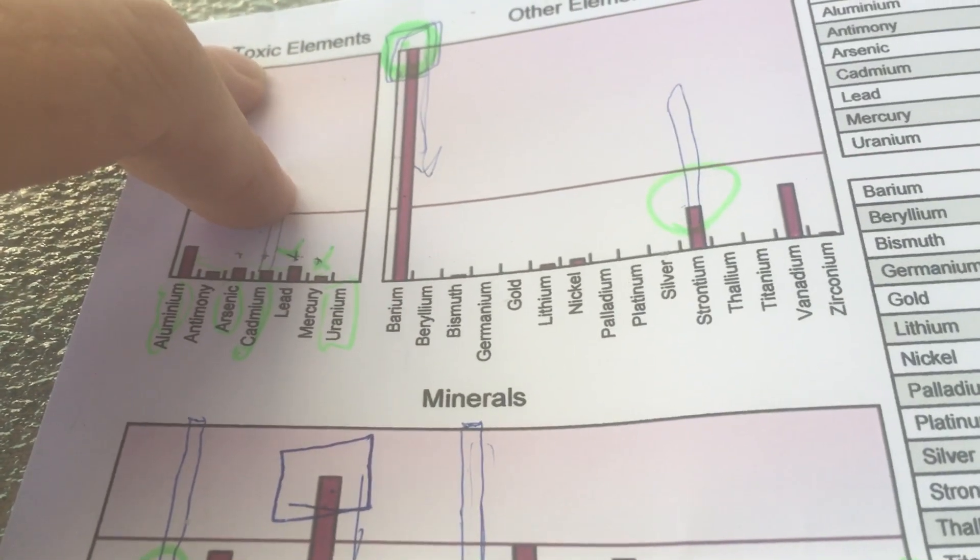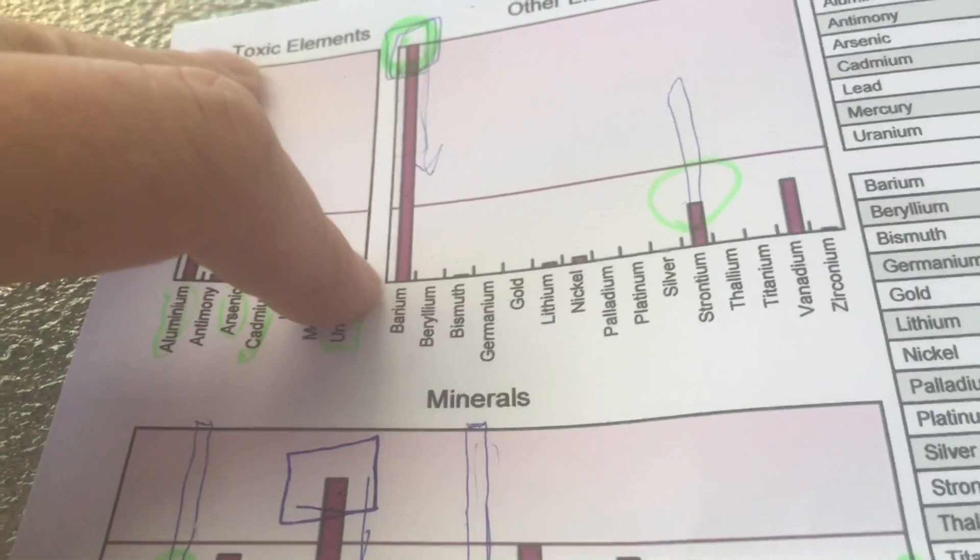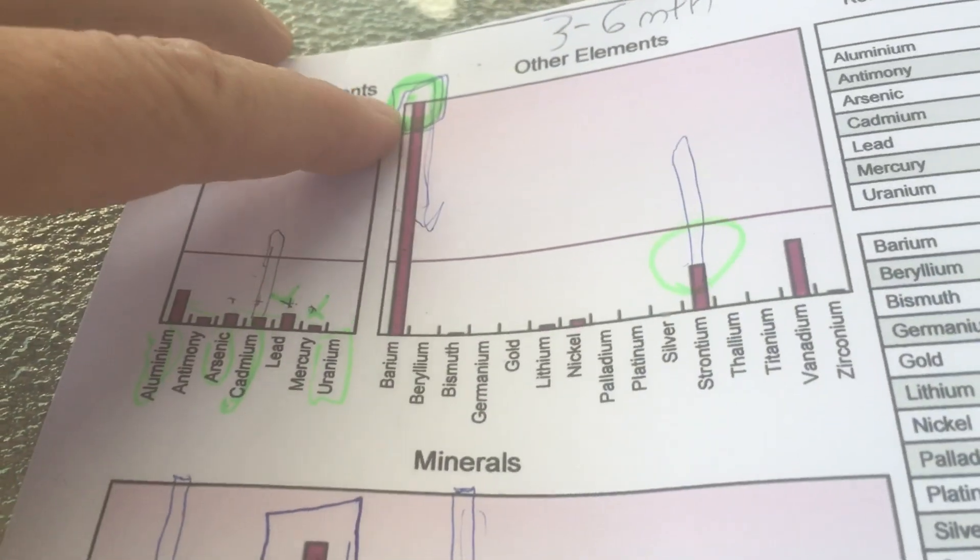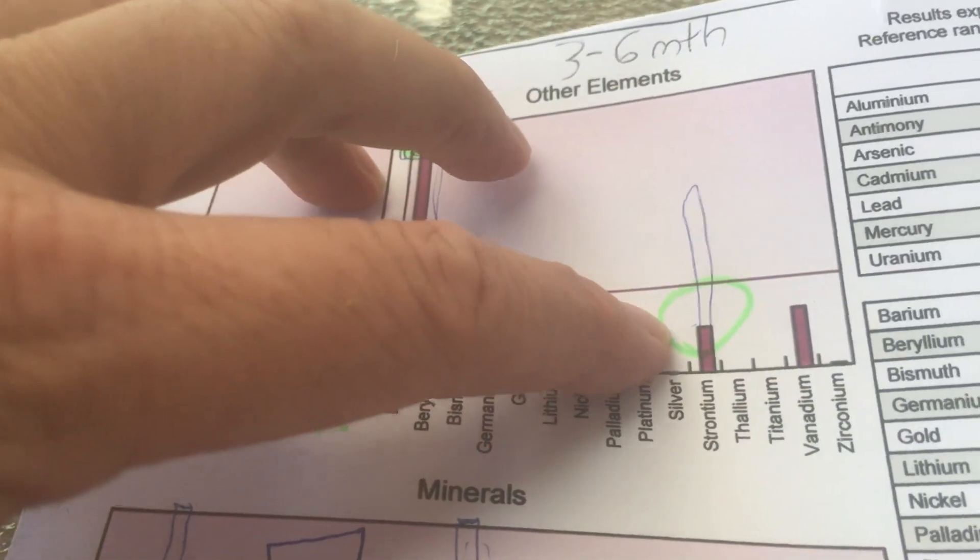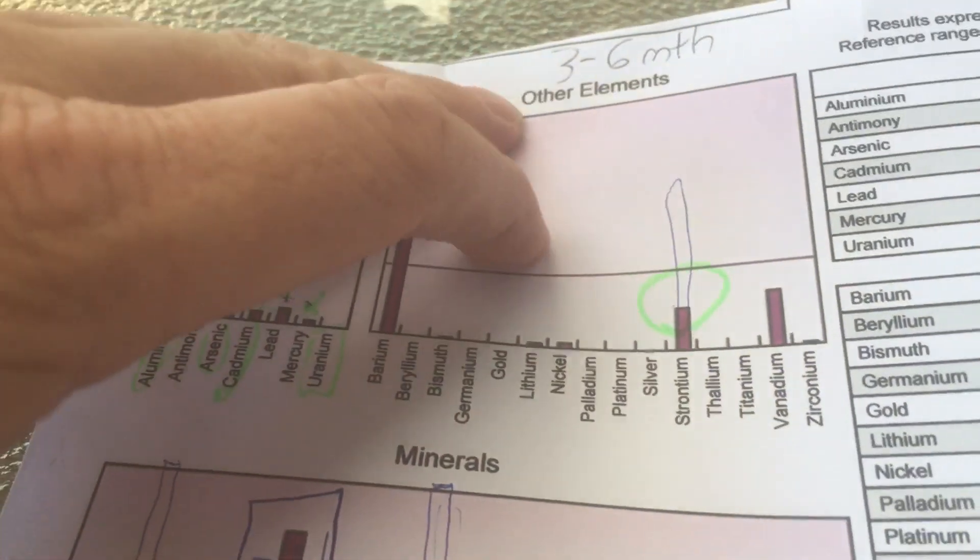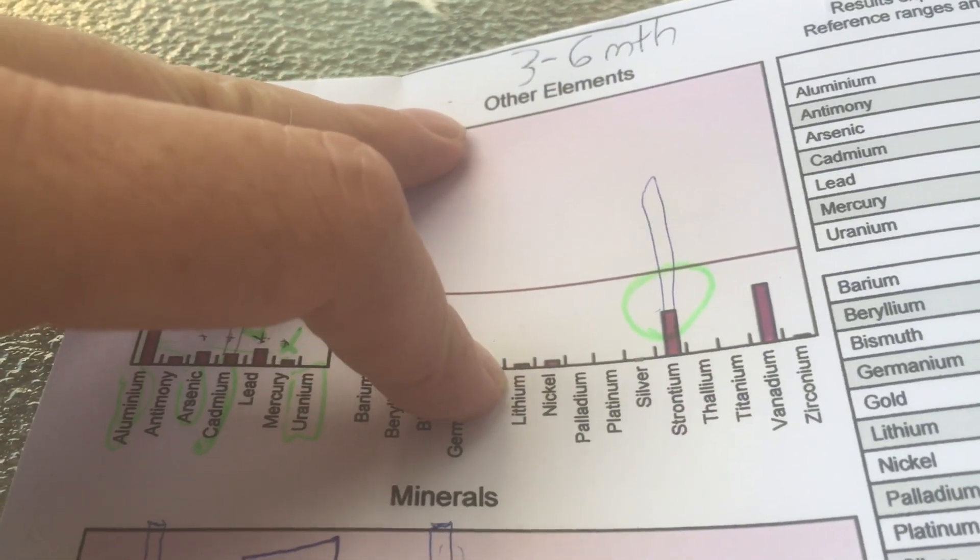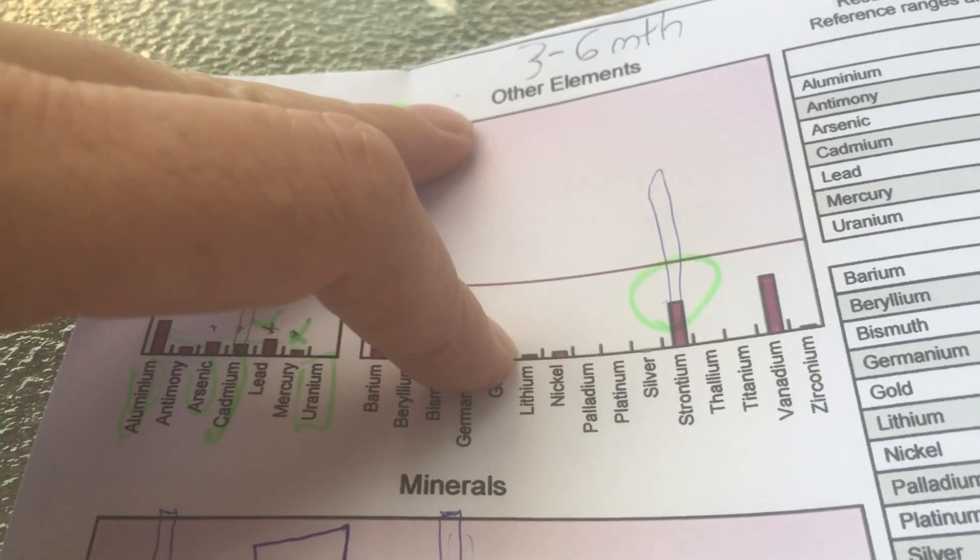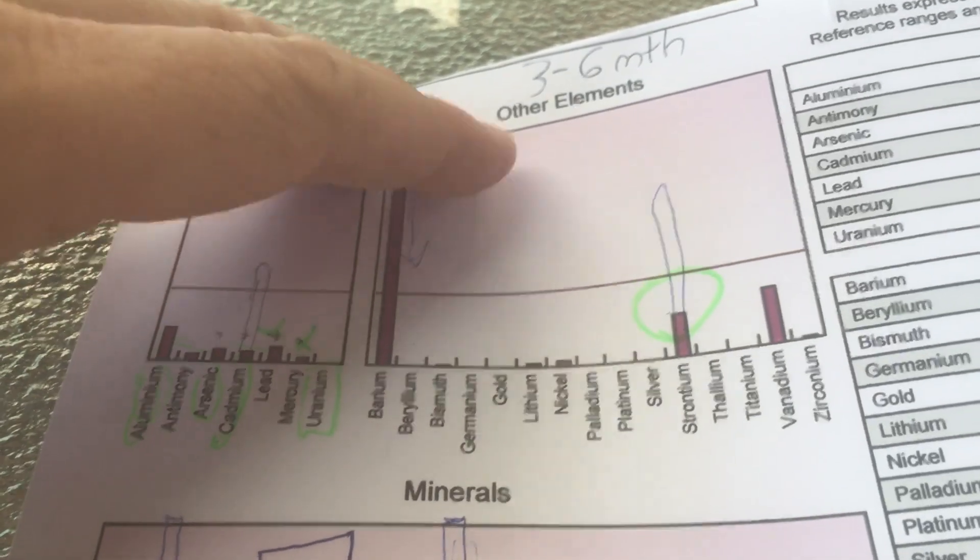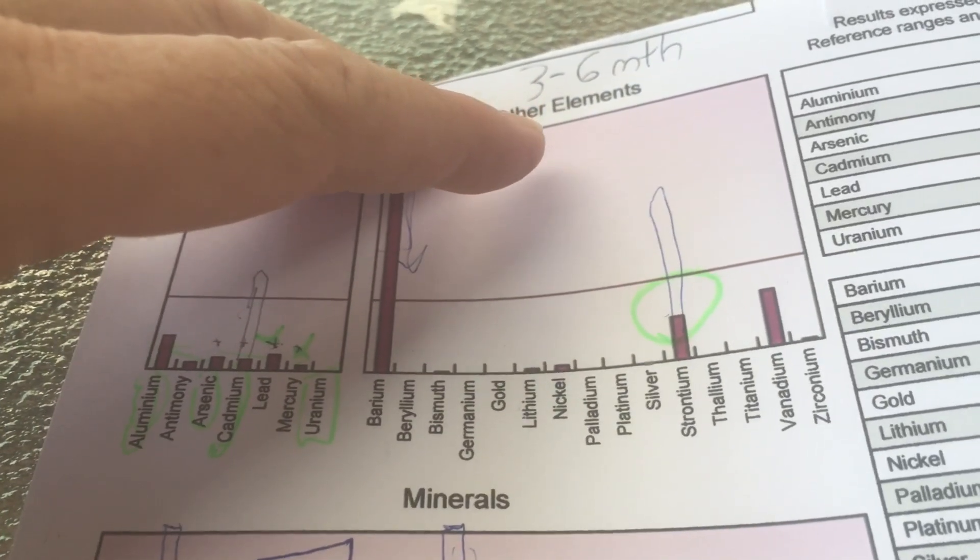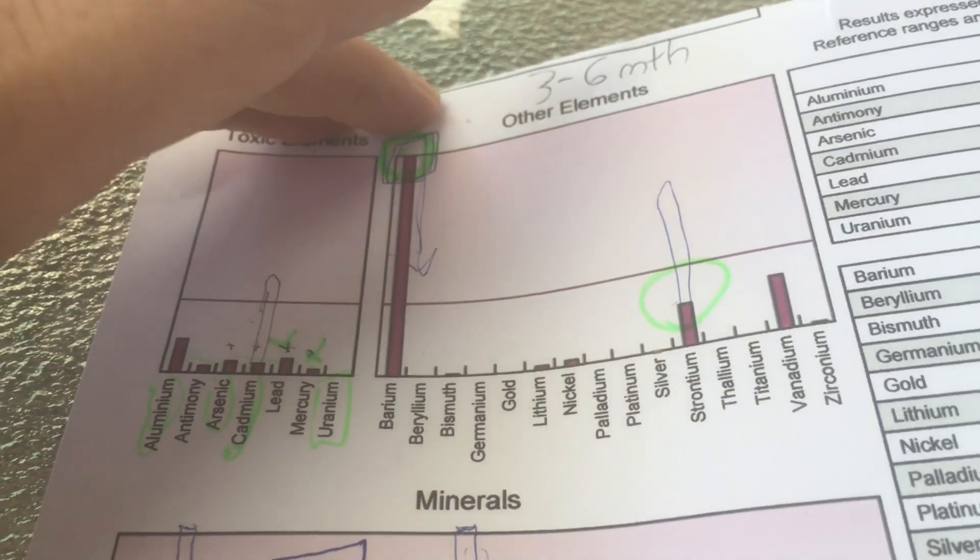chemtrail mixture is quite prominent. We've got barium is absolutely through the roof, and strontium is quite high. We've got lithium in there quite low, but again, all this shows is that it's in my body. It doesn't show how much is in there, it just shows what my body is getting rid of.